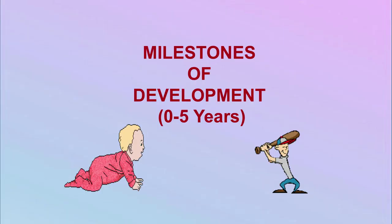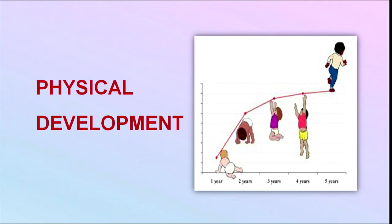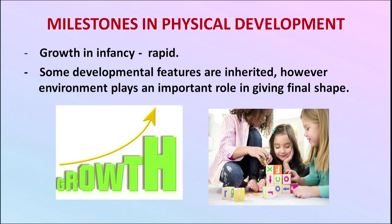Now that we understand what milestones of development are, I'll discuss the milestones from zero to five years of age. The first domain is physical development — development in the physical body. We know that there is rapid growth in infancy and early childhood. Some developmental features are inherited, however environment plays an important role. A child grows very rapidly during infancy and the early childhood period and is impacted by the different domains of development.